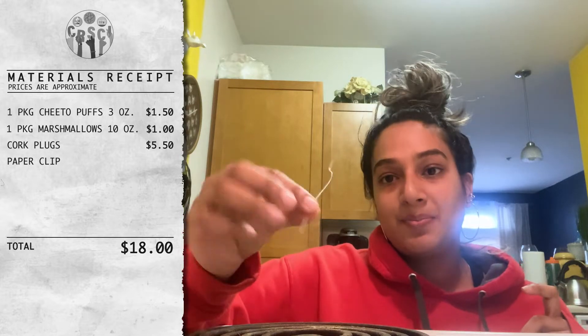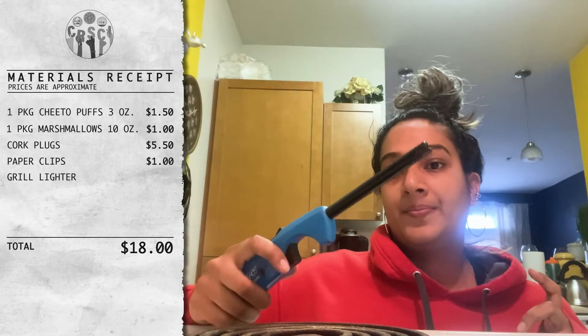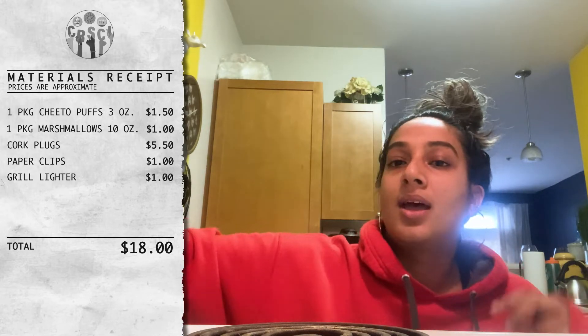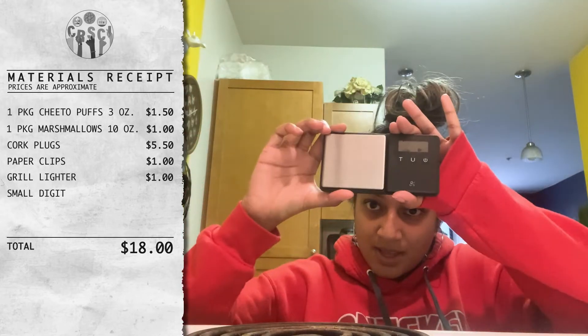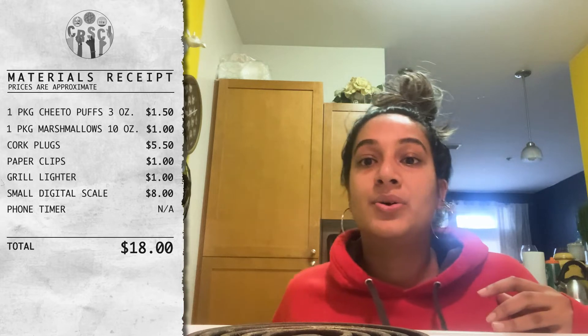Before we get started, here are the materials we're going to use during the lab: one Cheeto puff, one jumbo marshmallow, one cork stopper, an extended paper clip wire, a lighter, a scale, and a timer.